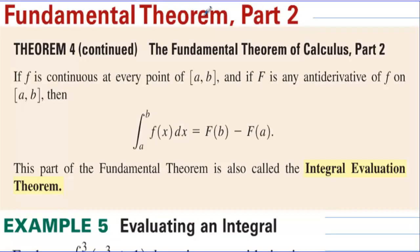Fundamental Theorem Part 2. Theorem 4 continued. The Fundamental Theorem of Calculus Part 2: if f is continuous at every point of AB and if F is any antiderivative of f on AB, then if you integrate from a to b of f of x, you take the integral, plug in the top number, and then minus — always minus — the integral with the bottom number plugged in. This part of the fundamental theorem is also called the integral evaluation theorem.